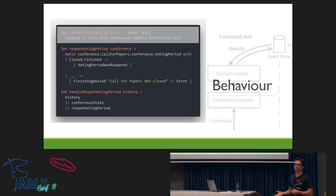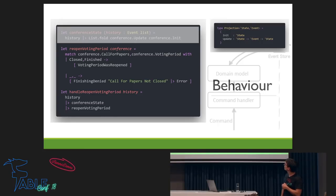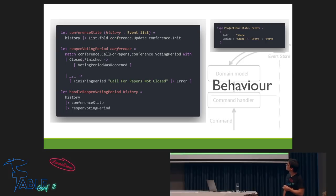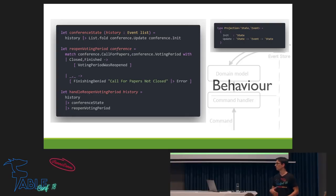How do we get the conference state? We need the events and we need to build a structure that gives us back a conference. We have the same projection and we say: the conference state is the fold of the history list using the conference update function. In the command model, we can also use those projections to get the current state of a part of the application and decide, or apply behavior within those constraints.